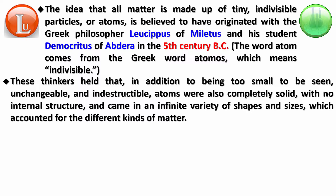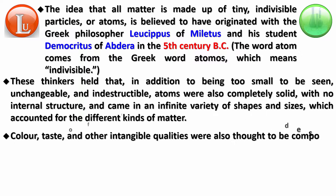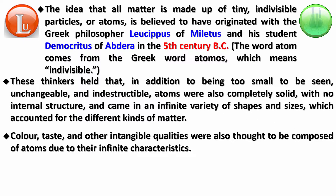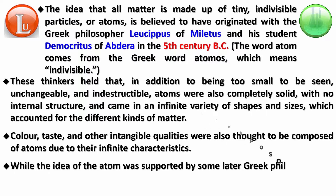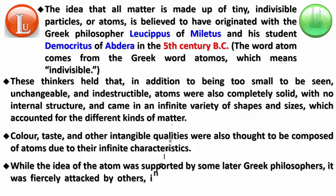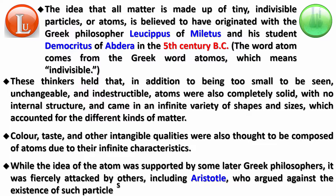The reason why different matters have various properties, especially solids, is because there are different types of material — and everything is because atoms have different shapes and sizes. An atom was supposed to be a solid at that time with nothing inside it, no internal structure. Color, taste, and other intangible qualities were also thought to be composed of atoms due to their infinite characteristics. Now while the concept of atom was supported by many later Greek philosophers, it was staunchly and surprisingly opposed by Aristotle, who argued against the very existence of such particles.